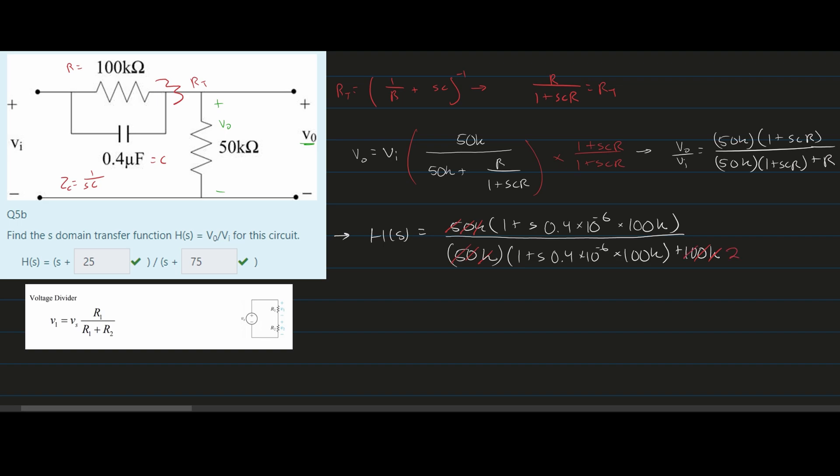Now we multiply these two together, then these two together, and add them. Doing this, we get H of S equals 1 plus S times 0.04, divided by 3 plus S times 0.04.